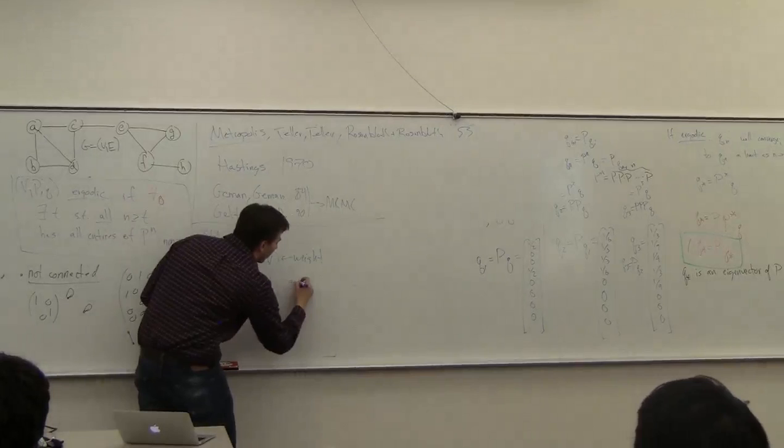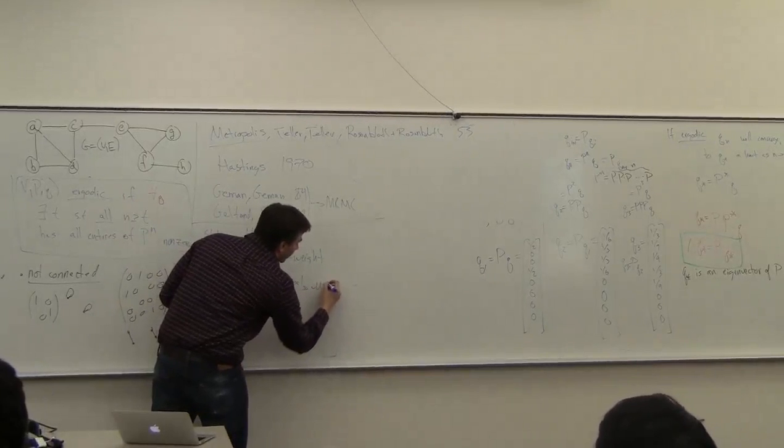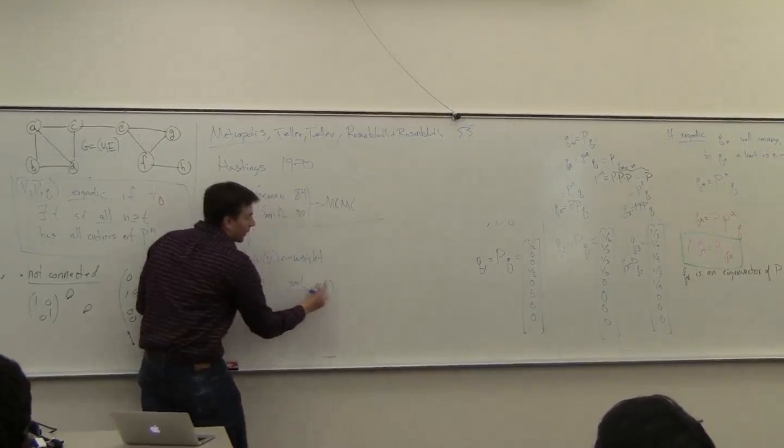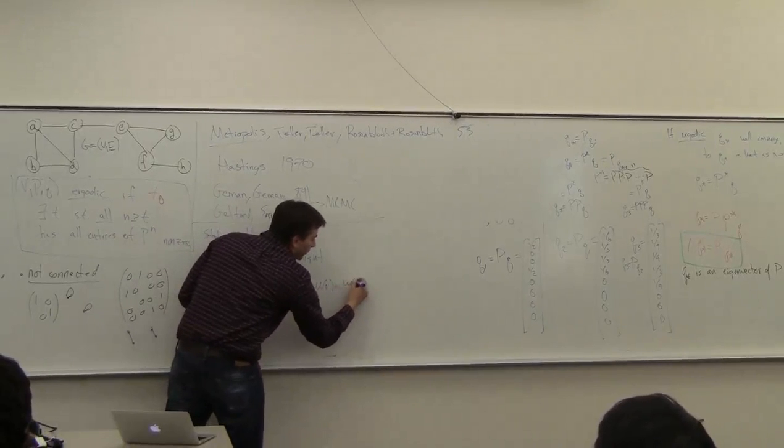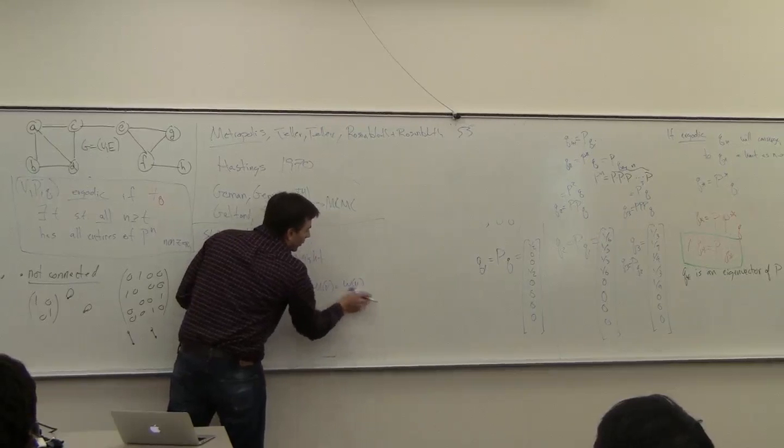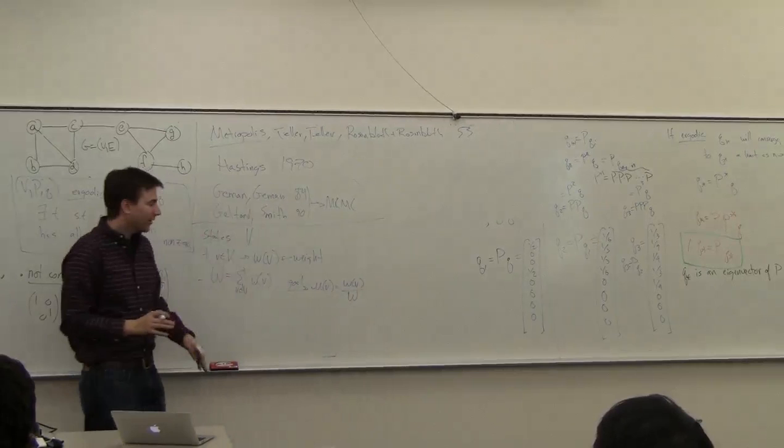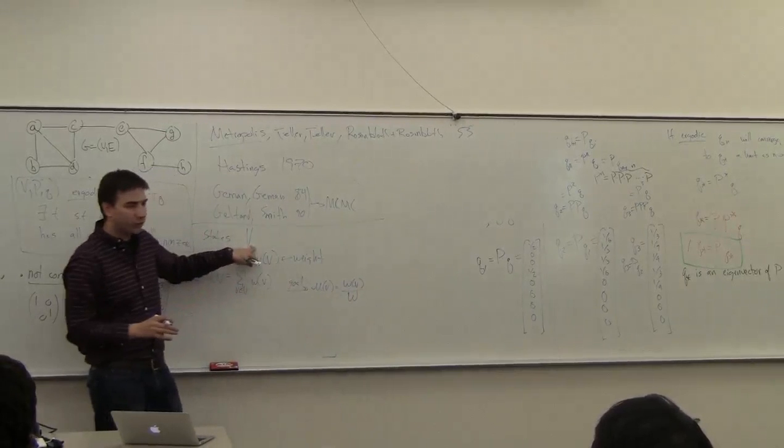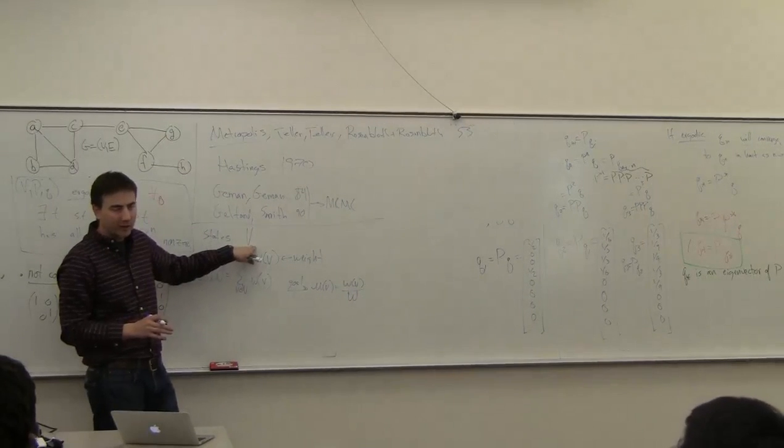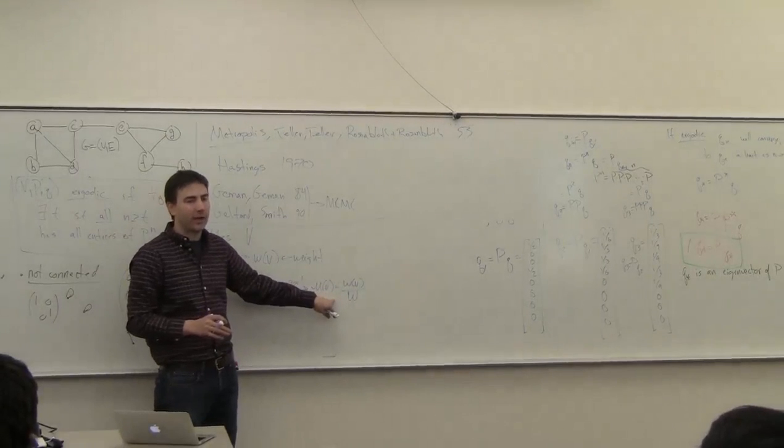So the goal is to get to the mu of v, you'd like to understand this distribution, which is the weight of v over this total weight. And so now this, if this is too large to actually calculate, then this is too large to write down exactly too. You can't even write this down.